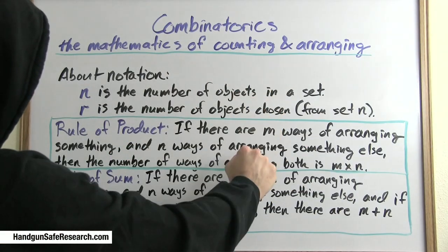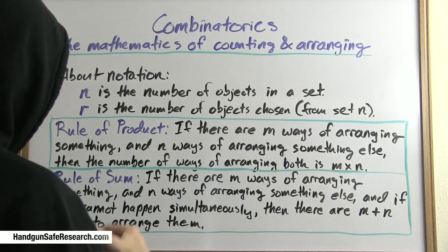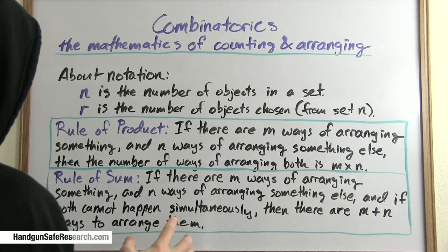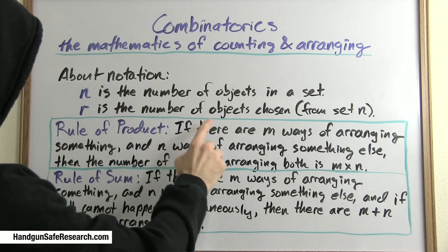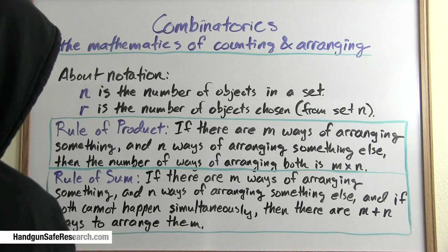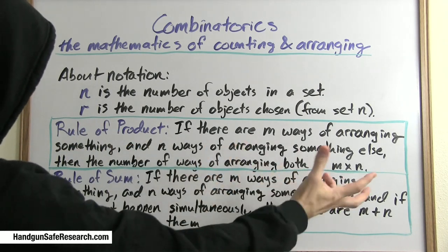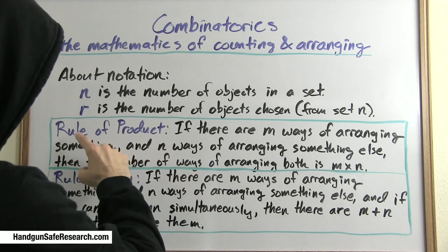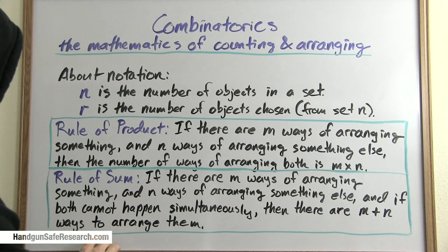We're going to be talking about combinatorics, the mathematics of counting and arranging. This is very introductory material. A quick word about notation: n is typically used to denote the number of objects in a set, and r is typically used to denote the number of objects chosen from that set. You will also see the variable k used that way.